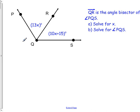All right, so this is a different type of problem. It says that ray QR is the angle bisector of angle PQS. So let's talk about what that means for a second here.